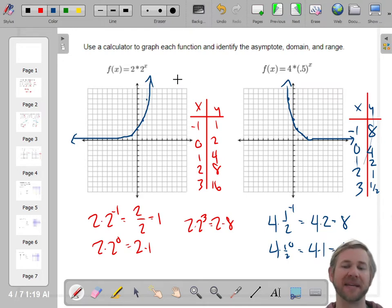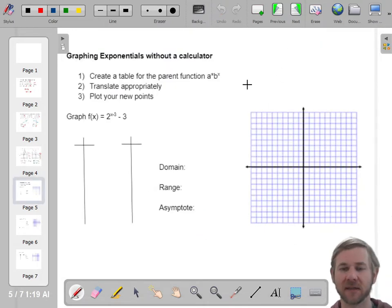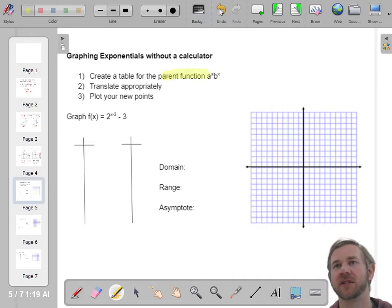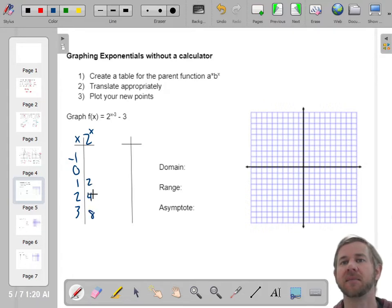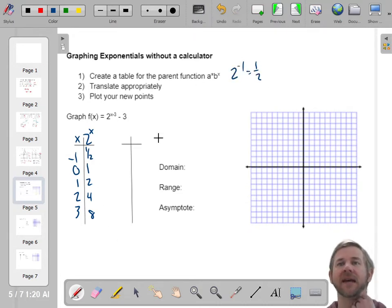Now we're going to do some translations. So that's basic stuff. Let's actually graph a couple of these things. So here's how we're going to do this. I'm going to give you a function, and the first thing you're going to do is create a parent function table. So if this is a power of 2, 2 to the X, I'm going to make a table for 2 to the X. And I'm going to use the same values every time. We'll do negative 1 to 3. And 2 to the 1st is 2. We're doubling it every time. 1 half, 1 fourth. Wait. No. We're cutting it in half. Half of 2 is 1. This is 1 half. Because 2 to the negative 1st is 1 half. So we've got this, and that is my parent function. What I'm going to do now is use what we know about translations to change this table. Cool.